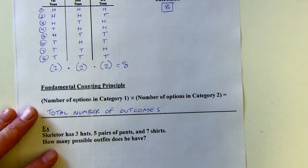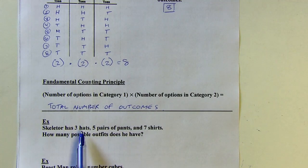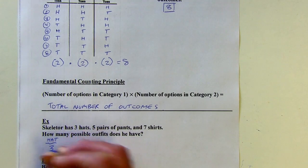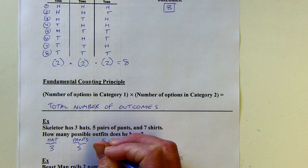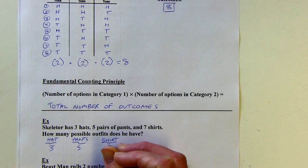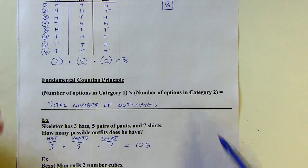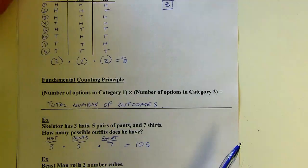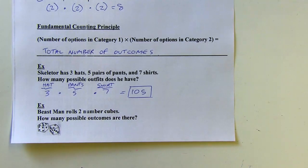Skeletor has three hats, five pairs of pants, and seven shirts. How many possible outfits does he have, assuming he uses one hat, one pair of pants, and one shirt? The hat category has three options, the pants category has five options, and the shirts category has seven options. If you multiply the number of options in each category, that comes out to 105. You could make an outcome chart, but it's much quicker to use the Fundamental Counting Principle here.